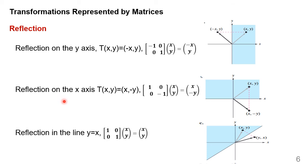The second one: reflection on the x-axis. We have the matrix A equal to [[1, 0], [0, -1]]. When we multiply this with (x, y), we get (x, -y). So we have a vector with coordinates (x, y). When we multiply this with matrix A, we get (x, -y). This vector is reflected — it gets reflected into this coordinate.